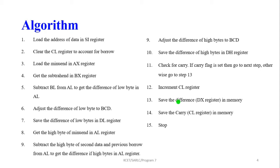First, perform subtraction between AL and BL; the difference of low byte values is stored in AL. This AL result is not a BCD number, so we must adjust the difference of the low byte to BCD using the DAS instruction. Next, save the difference of the low byte in the DL register — after BCD correction the result is in AL, which is then moved into DL.